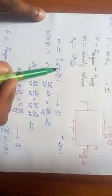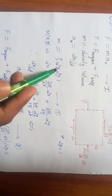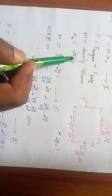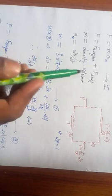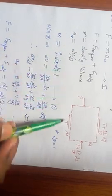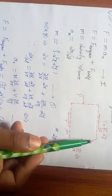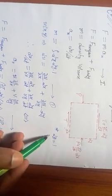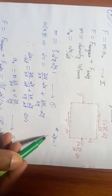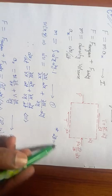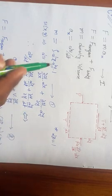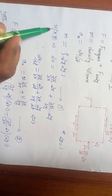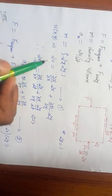Now, mass m equals density ρ times volume, where volume is dx·dy·1, with the 1 representing the unit dimension in the z-direction.